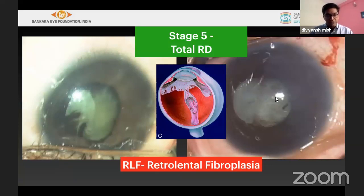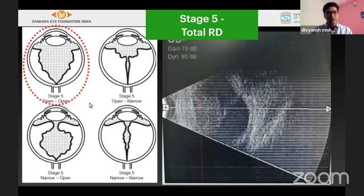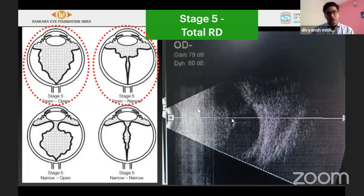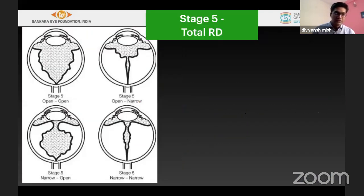Stage 5 involves complete retinal detachment — what is called retrolenticular fibroplasia, where the completely detached retina is just behind the lens or pupil. On B-scan, stage 5 has different configurations: open-open (anterior and posterior funnel both open), open-closed (anterior open, posterior tight/closed), narrow-narrow (both closed), and closed-open (anterior closed, posterior open).